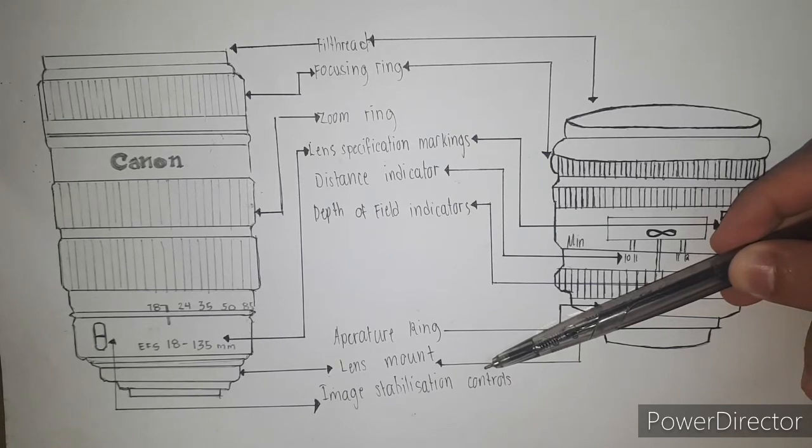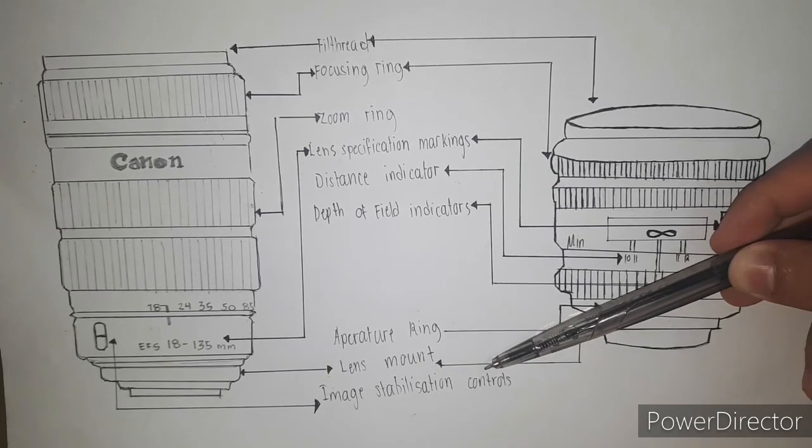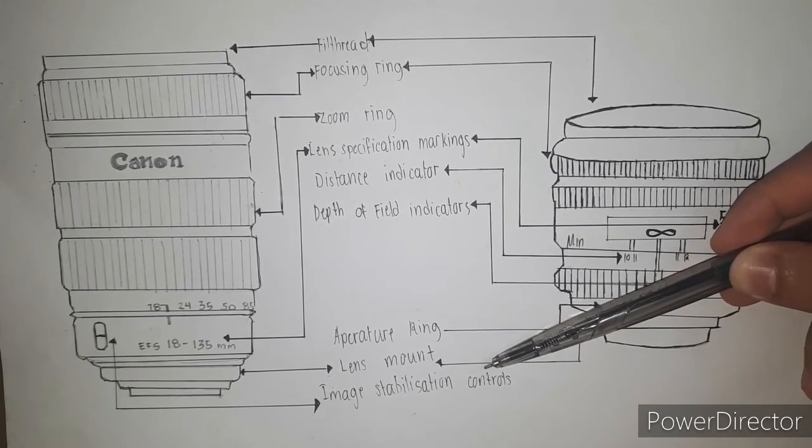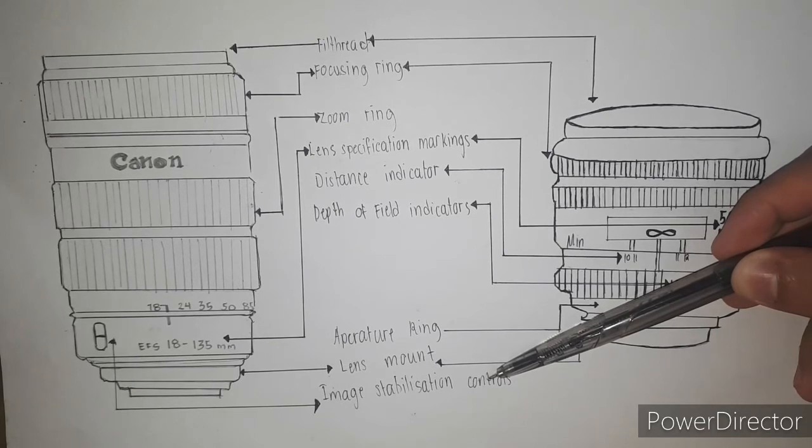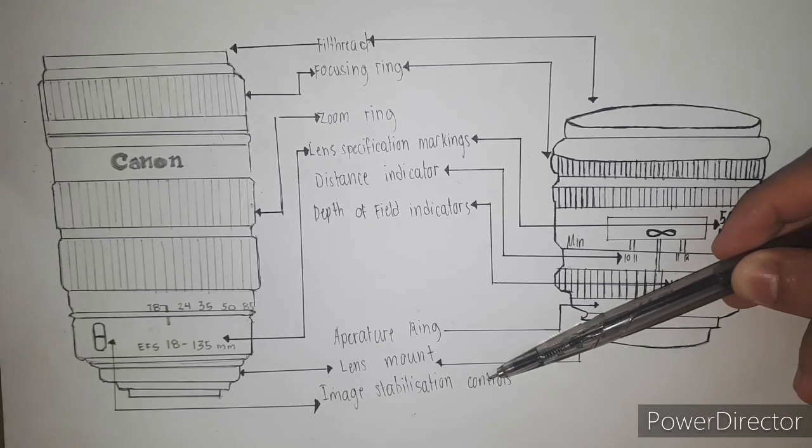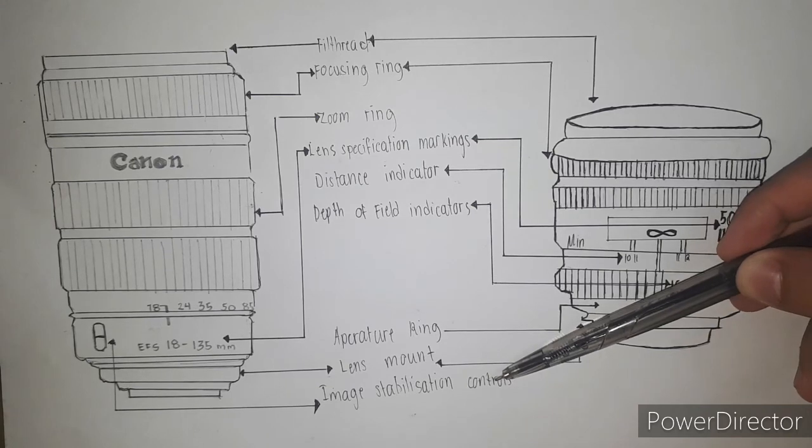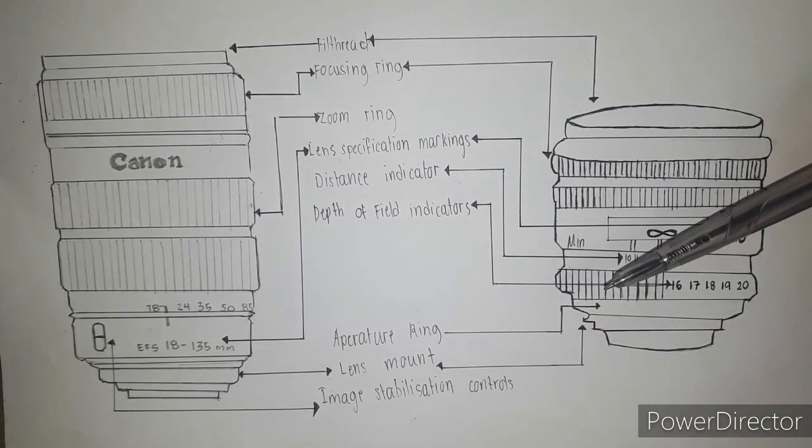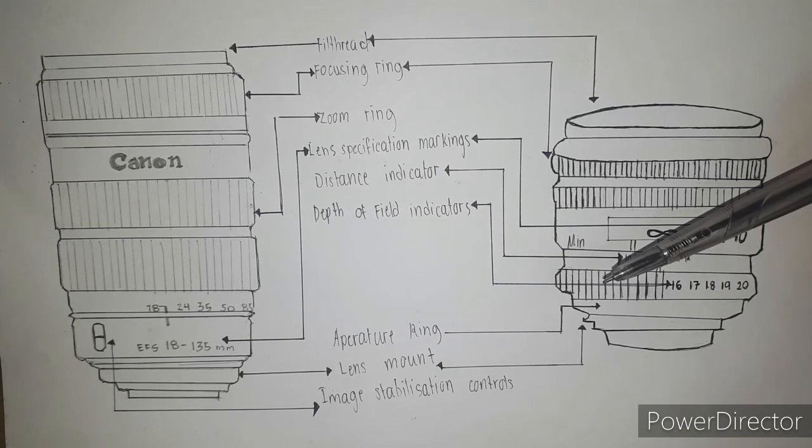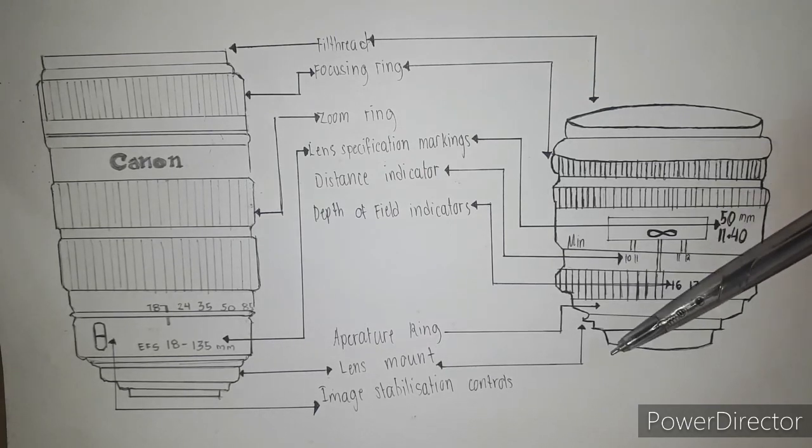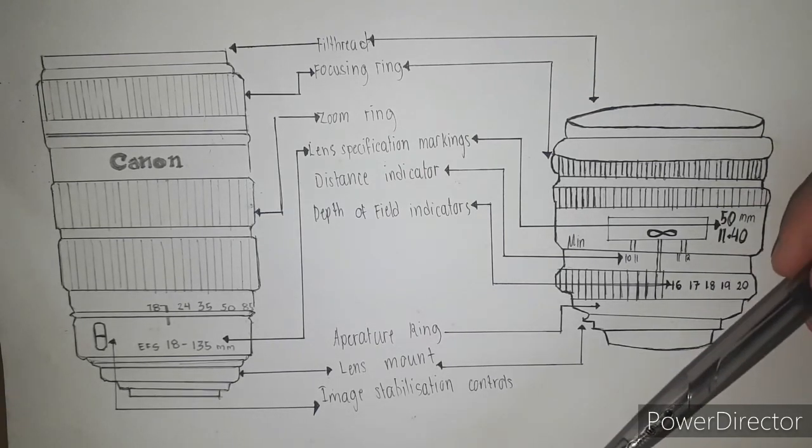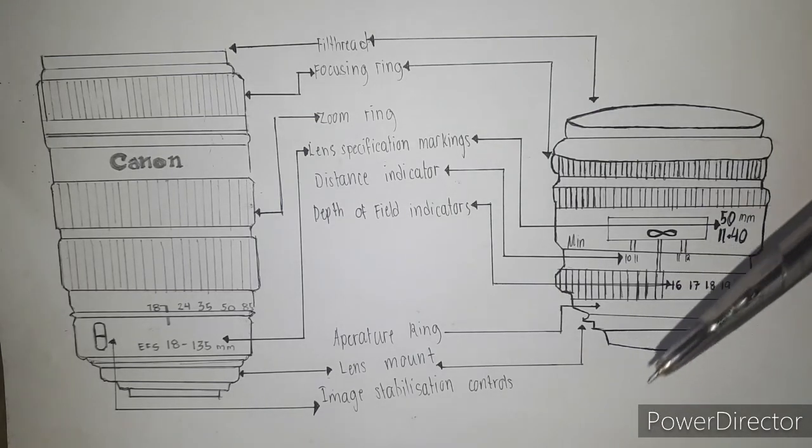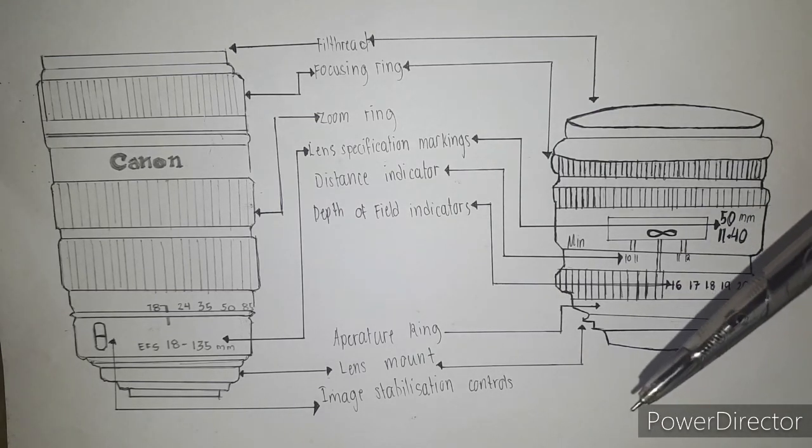And lastly, the lens-based stabilization or what we call image stabilization control. It uses a floating lens element which is electronically controlled and shifted opposite to any camera shake recorded by the camera. In-camera systems work similarly but will physically shift the image sensor to compensate for these movements.